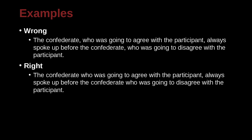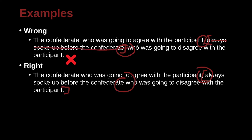'The confederate who was going to agree with the participant always spoke up before the confederate who was going to disagree with the participant.' The question is whether the clause is independent or dependent. Looking at it, this part of the sentence goes all the way to the end rather than being a separate idea — you cannot really cut it out and have it still make sense. So it is not a non-restrictive adjective clause, and no commas should be used.